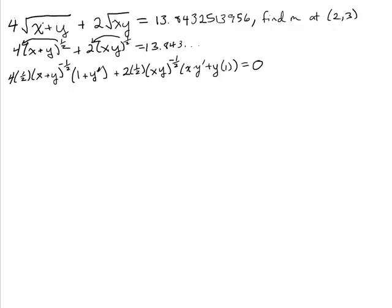Now, when you have one like this, a lot going on, we simplify as much as we can. The one-half and the four can become a two, and the one-half and the two will cancel. And then we need to solve for y-prime, but we can see that there's two of them in there. So what we'll do is we'll go ahead at this point and plug in our x and y values and see how much we can simplify.